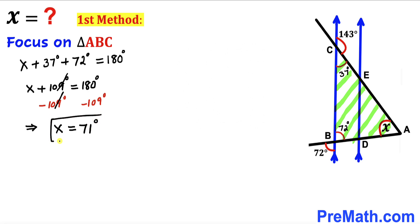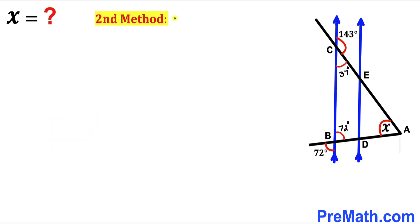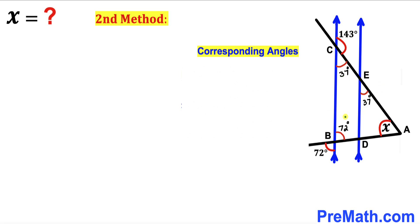Now I'm going to show you the second method. Let's recall the corresponding angles property. This angle and this angle are corresponding angles — if this angle is 37 degrees, this angle has to be 37 degrees as well. Likewise, this angle and this angle are corresponding angles — if this angle is 72 degrees, this angle has to be 72 degrees as well.